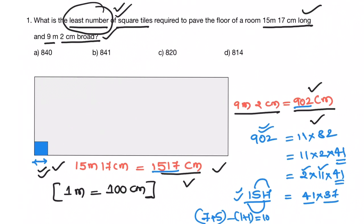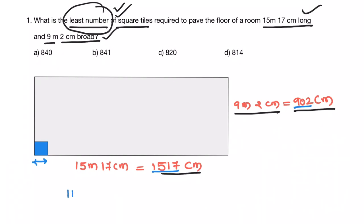Now, what is the highest common factor of 902 and 1517? That is 41. HCF is 41.